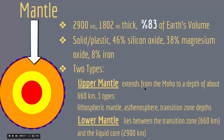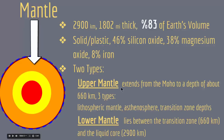The upper mantle extends from the Moho to a depth of about 660 kilometers. The lower mantle lies between the transition zone at 660 kilometers depth and the liquid core. The upper mantle has three zones: the lithospheric mantle, the asthenospheric mantle, and the transition zone. Rocks in the upper mantle are cool and brittle, while rocks in the lower mantle are hot and soft but not molten. The brittle upper mantle rocks can break under stress and produce earthquakes.